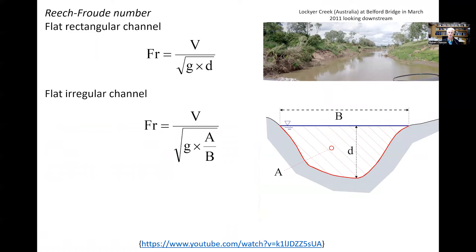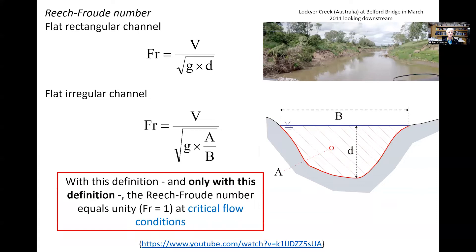We often introduce a dimensionless number called the Froude number in open channel flow. For a flat rectangular channel, the Froude number equals the ratio of velocity to the square root of g times d. For an irregular channel, the Froude number equals the velocity divided by the square root of g times the ratio of cross-section area to free surface width. With this definition, the Froude number equals one at critical flow condition.